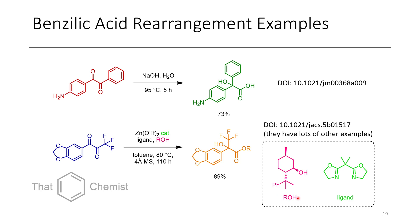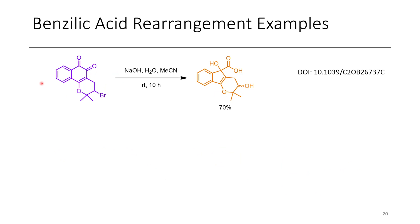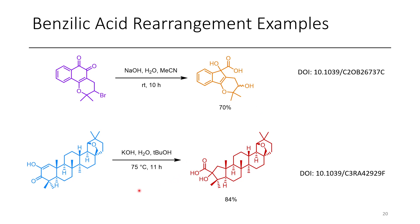Another benzylic acid rearrangement example shows a ring contraction, converting a 6-6-6 system into a 6-5-6 system with extrusion of a carbon to an exocyclic position. Note that a secondary bromide was not tolerated and was hydrolyzed under the reaction conditions. A further example demonstrates ring contraction from a six-membered to a five-membered ring in a steroid derivative, converting a five-ring system into a 5-6-6-6-6 to 5-6-6-5-6 arrangement — a cool conversion achieved in good yield.